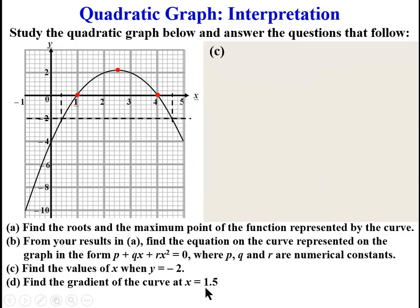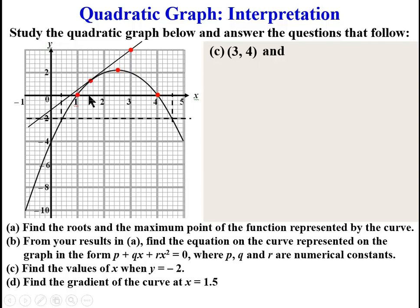So we go to problem D: find the gradient of the curve at X is equal to 1.5. At X equals 1.5 on the curve is here. We draw a tangent to that point. Drawing the tangent, we locate one other point on the line. That point is (3, 4) and the other point we have here is (1.5, 1.2).